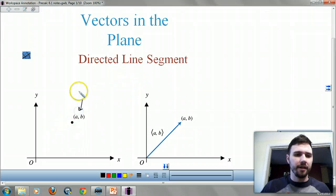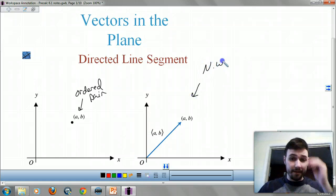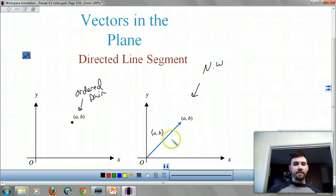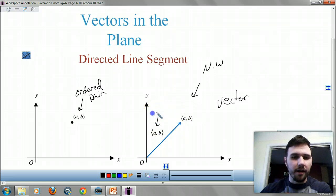This right here is an ordered pair, right? And yes, I would draw this picture and make it noteworthy, guys. Because this is a vector. These, with these crazy brackets, are components of a vector.